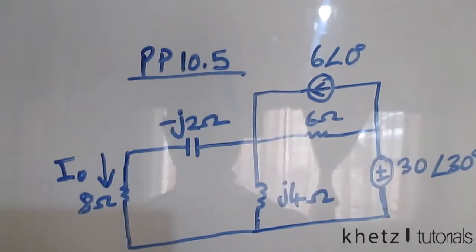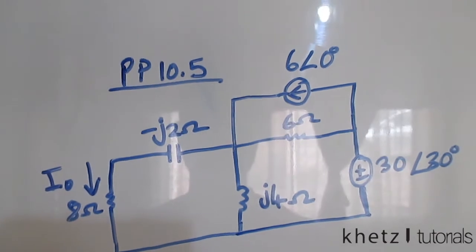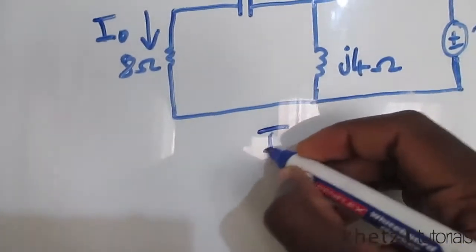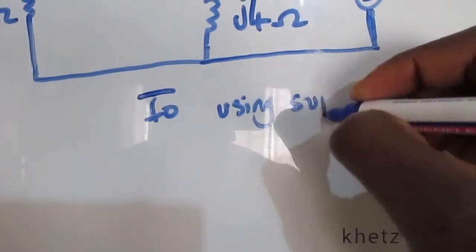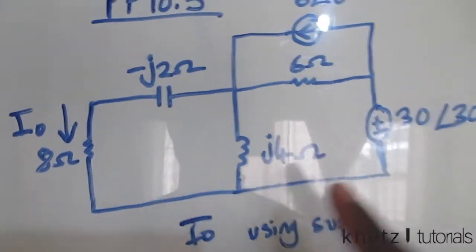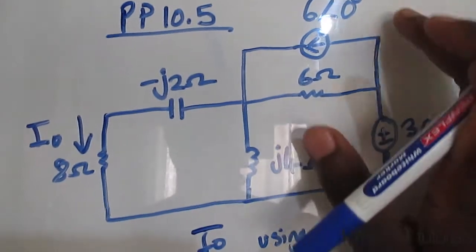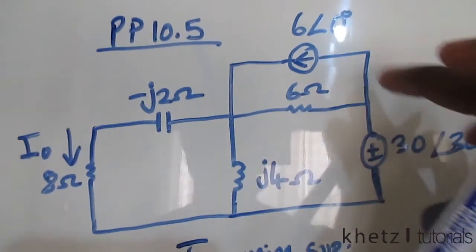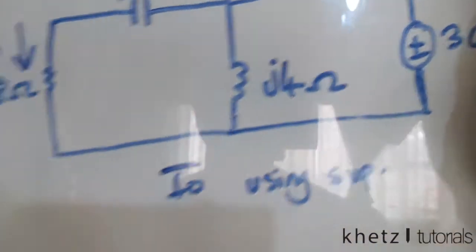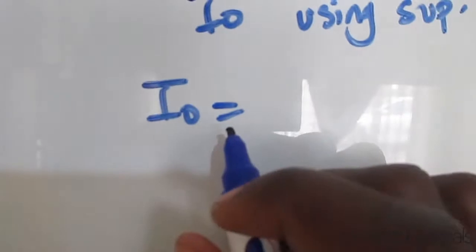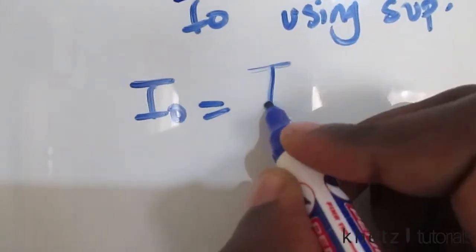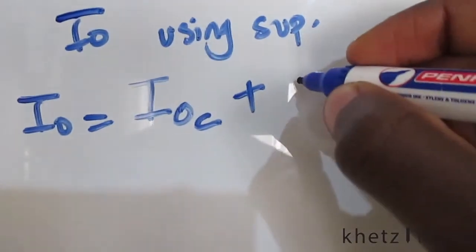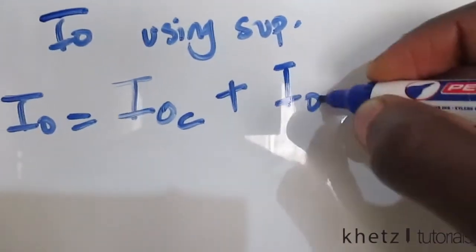Welcome to CAST Tutorials. In this video I'll be covering practice problem 10.5. We're asked to find IO using superposition. The superposition method basically finds the contribution of all the independent sources and adds them up. We have two independent sources: a current source and a voltage source. The total IO is the sum of the contribution of the current source plus the contribution of the voltage source.